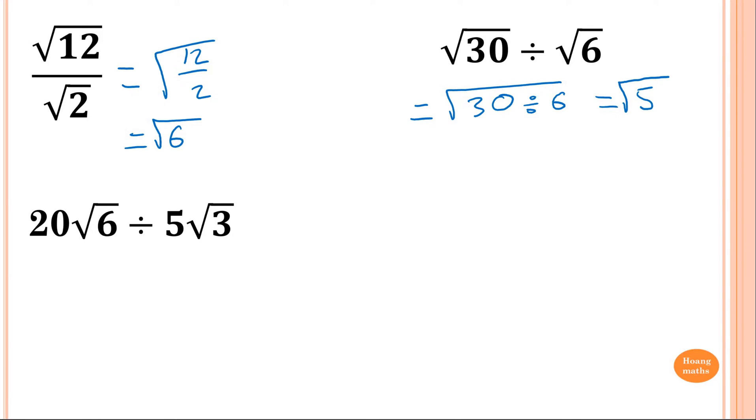Now, this one here. So 6 square root of 50 divided by 3 square root of 5. You go 6 divided by 3 is 2, and 50 divided by 5 is 10. So that means 2 square root of 10.